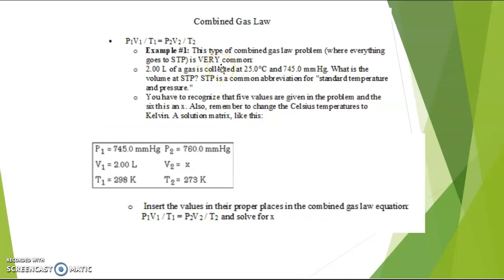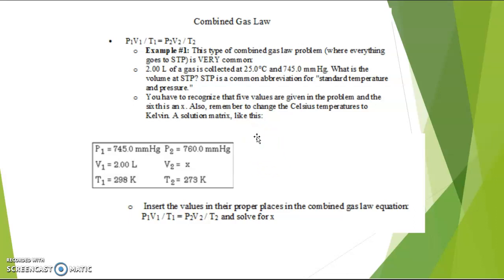We can also have a combination of the different laws, as you can see here, where pressure one times volume one divided by temperature one equals pressure two times volume two divided by temperature two. Here is an example — plug your data in and, as always, you will have one unknown that you can solve using proportions. Remember that temperature always has to be in Kelvin, so if you have Celsius, add 273 to convert. These are the problems you need to study for calculating temperature, pressure, and volume for gases. Thank you very much.